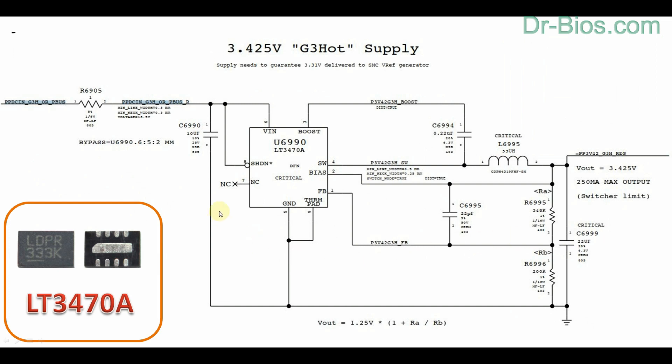The next IC that is used for generating PP3V42 underscore G3H voltage is LT 3470A IC.